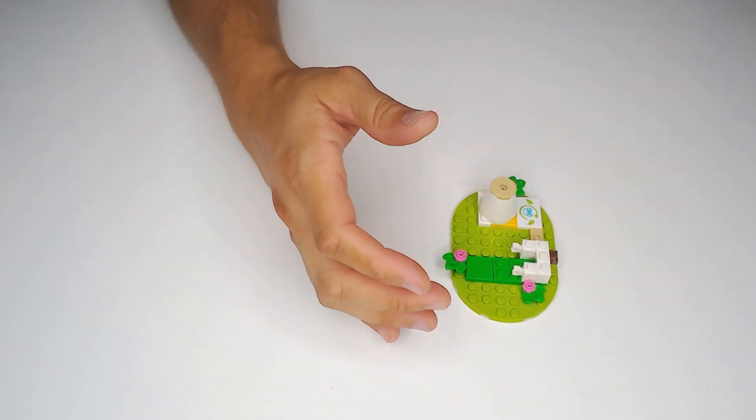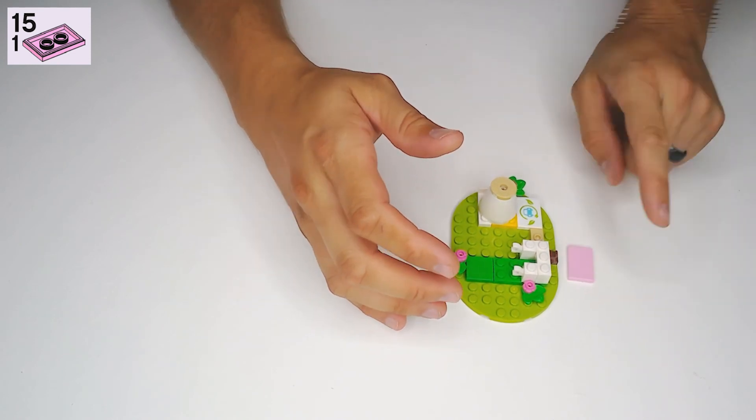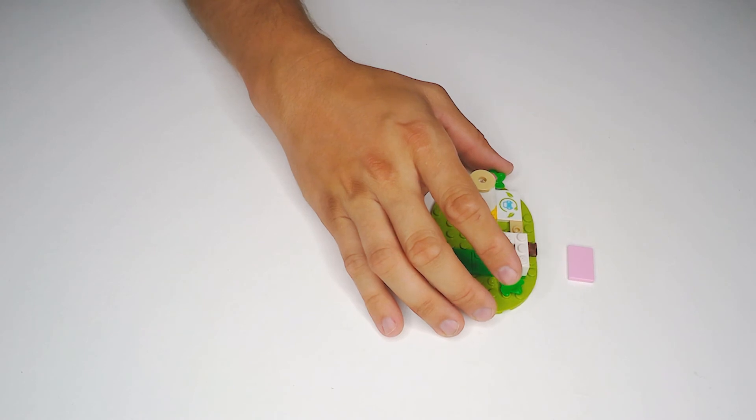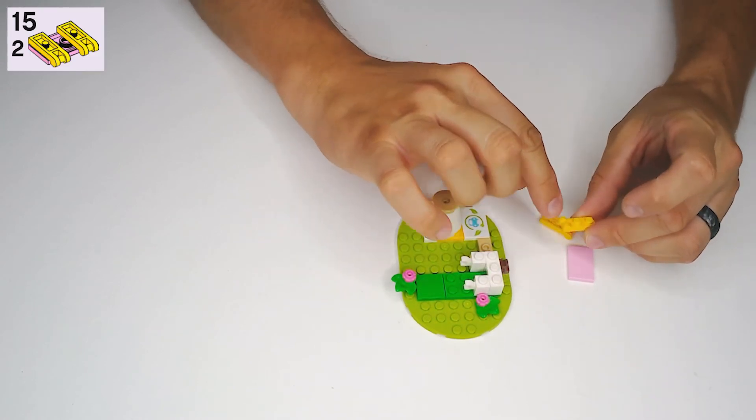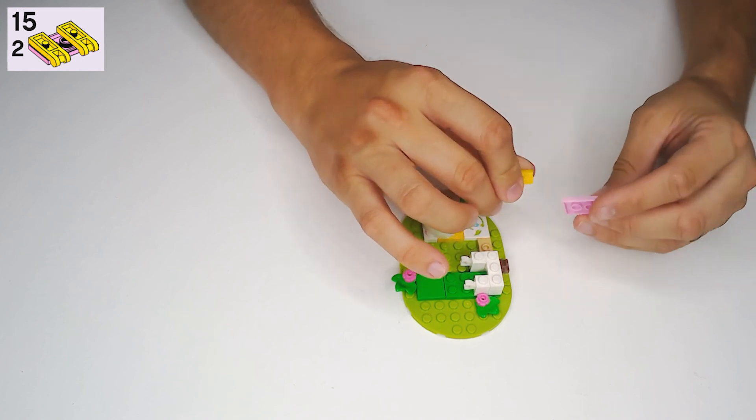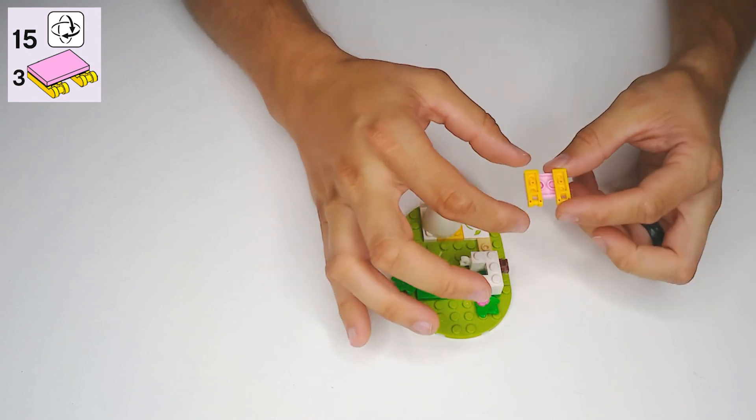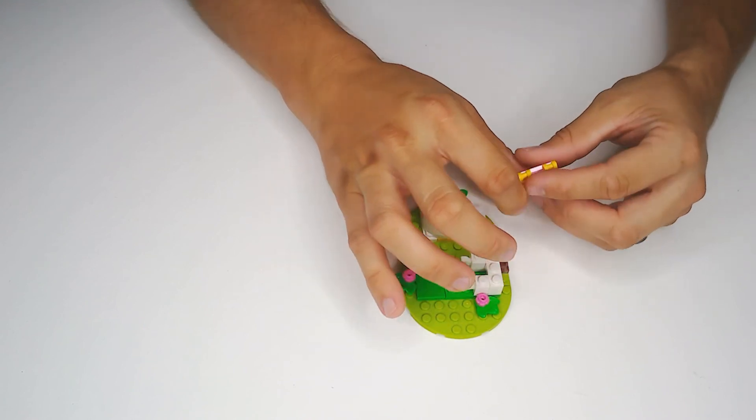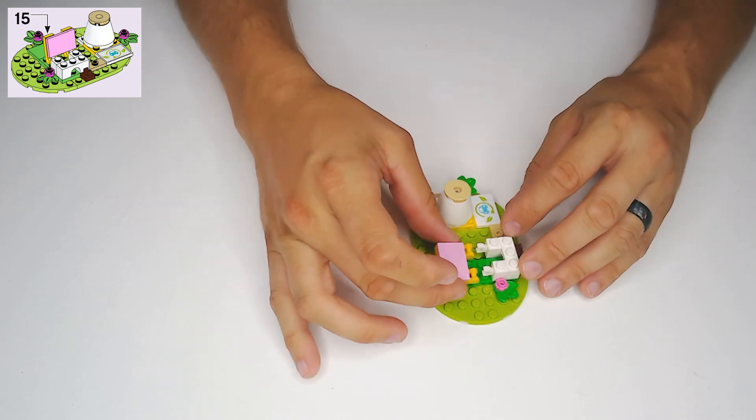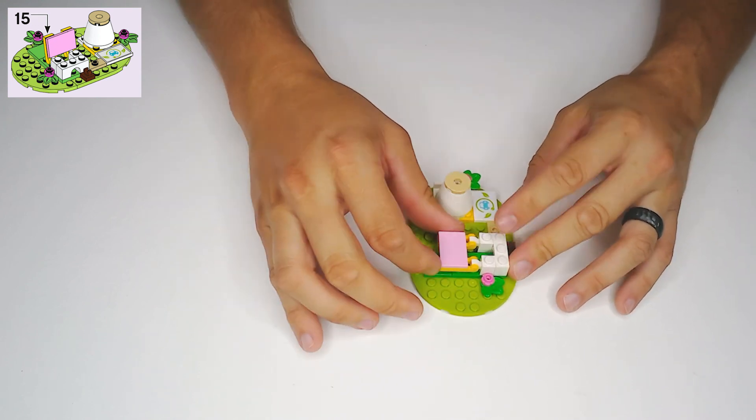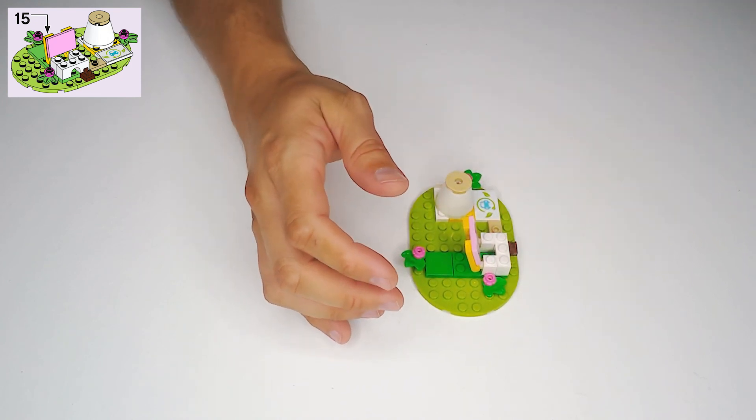And then in fifteen, grab a pink two by three tile, and yellow four by two plate pieces with the small bar handle on the end, those are going to go on the underneath side, so flip this over, on the other side like that, on each end, and then we'll flip it over like that, and this is going to go right in here, clipped into those two clip hands, and then we're going to rotate this up like that, it's kind of like a little bench back, I guess it is a bench back.